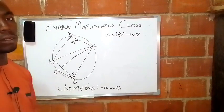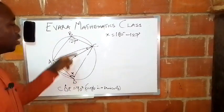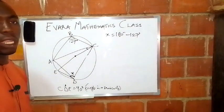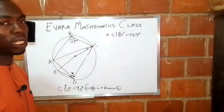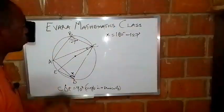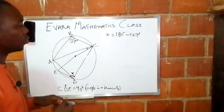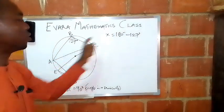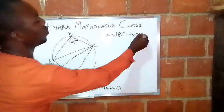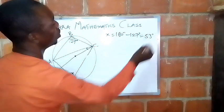From one of the theorems that we've used earlier, interior opposite angles are supplementary. That is, when you add them together they give you 180 degrees. So if here is 127, then this angle that we label as X will now be 180 degrees minus 127, and that gives us 53 degrees.